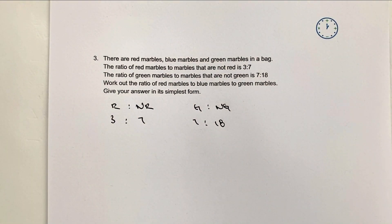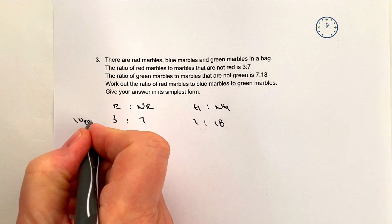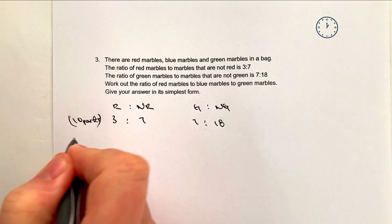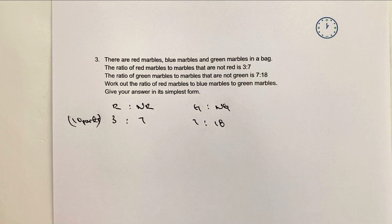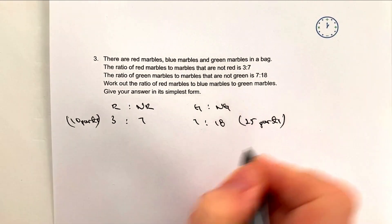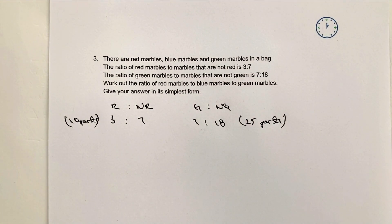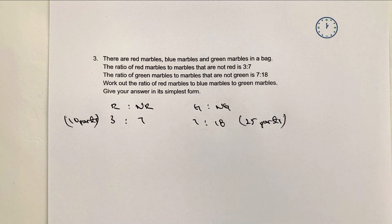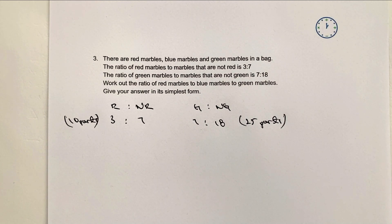Now what you might see is that red to not red means that we've got 10 parts, okay, or 10 items. Green to not green means that we've got 25 parts. So what I'm going to do is I'm going to make the number of parts the same for both ratios and I'm going to choose 50 parts.